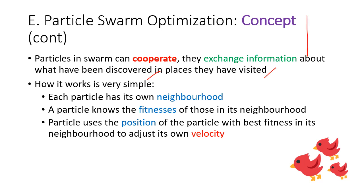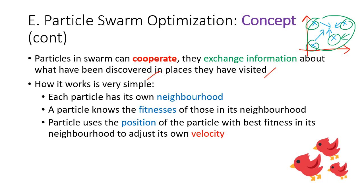In a search space, you can have many particles moving everywhere, and each of these particles communicates with each other about the solutions they have found. Each particle has its own neighborhood, and the particle knows the fitness values of those in its neighborhood. For example, particle A knows the fitness of particles B, C, and D.